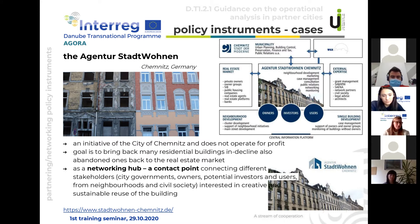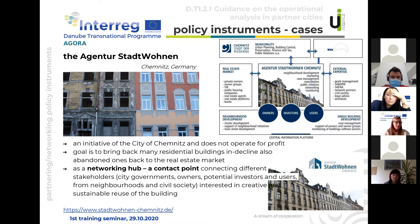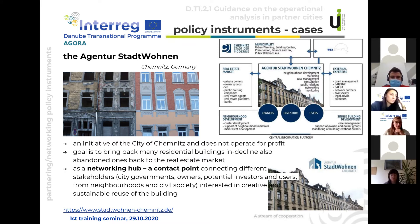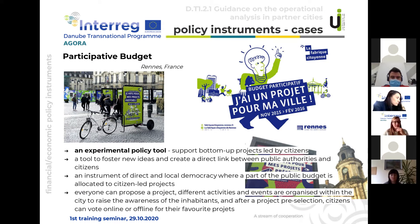The first innovative case is the Agentur Stadtumbau, an initiative of the city of Chemnitz, Germany. It is a non-profit organization whose goal is to bring residential buildings in decline or abandonment back to the real estate market. The agency works as a networking hub — a contact point connecting different stakeholders such as city governments, owners, potential investors, users from neighborhoods, and civil society interested in creative and sustainable use of buildings.